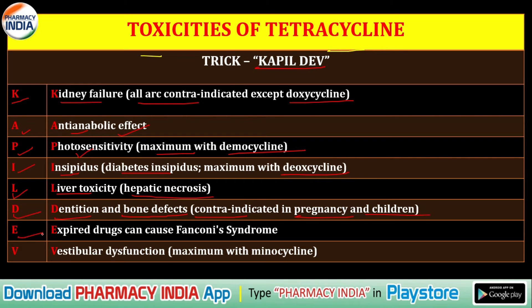E denotes expired drugs, which can cause Fanconi syndrome — we remember Fanconi syndrome by associating it with the letter E in the mnemonic. V denotes vestibular dysfunction, which is seen maximum with minocycline.